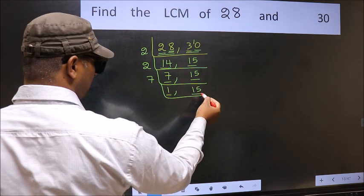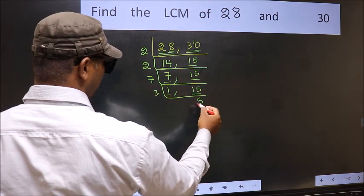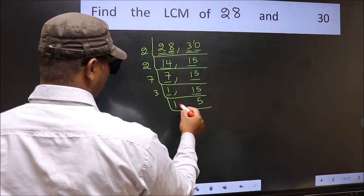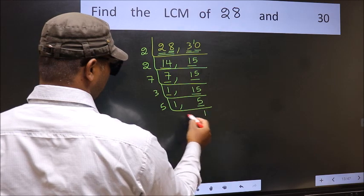So focus on the other number 15. 15 is 3, 5's 15. Now we have 5, 5 is a prime number, so 5, 1's 5.